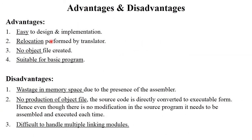The advantages of the compile and go loader are: it is very easy to design and implement; relocation is performed by the translator itself; no separate loader is needed since the assembler acts as both translator and loader; no object file is created because the translator converts the source program and directly places it into memory; and it is suitable for basic programs.